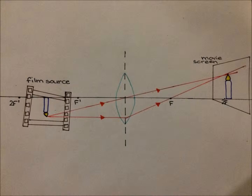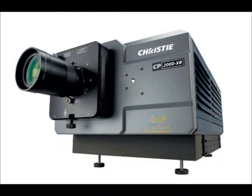Since the image created is inverted, the film, CD, or DVD is placed into the projector upside down. This way, the image projected on the screen is actually upright. The screen is placed at the point beyond two times the distance of the principal focus so that the image can be displayed on the screen. And that is how a projector works, based on the properties of light.